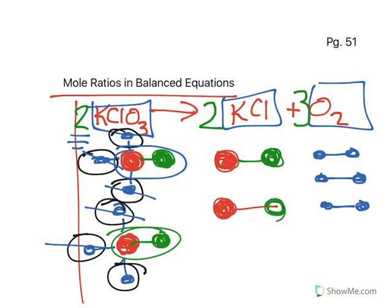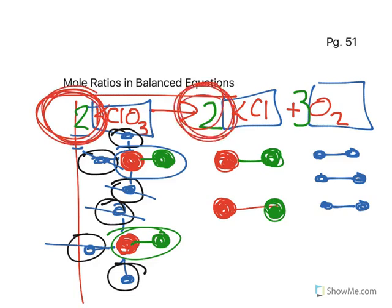This is just like a recipe for making something. And the important thing that we really need to pay attention to are these coefficients that we added in front. These coefficients that we added in front are going to be what makes up what we call the mole ratio.